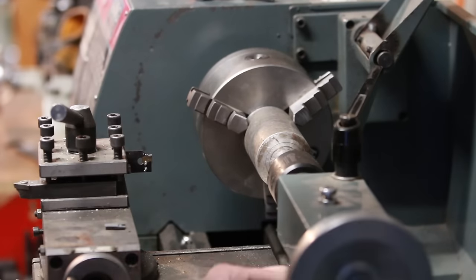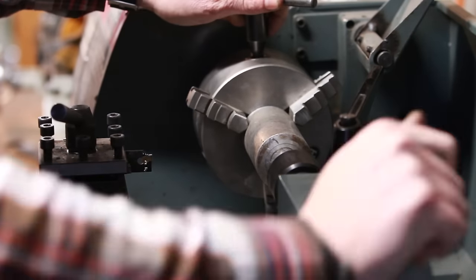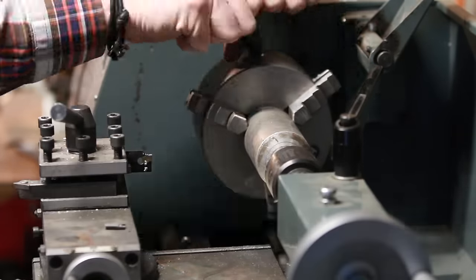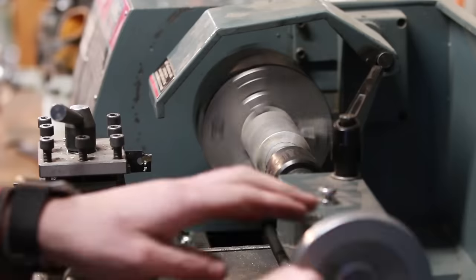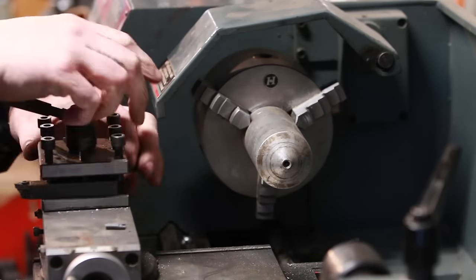Alright, so I'll throw this piece of scrap aluminum in the lathe and I'm using a live center on the end that's closest to the camera just to help when I lock it down in the jaws to keep it nice and straight.